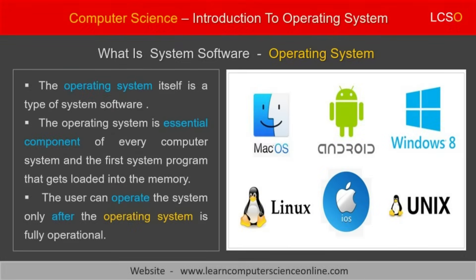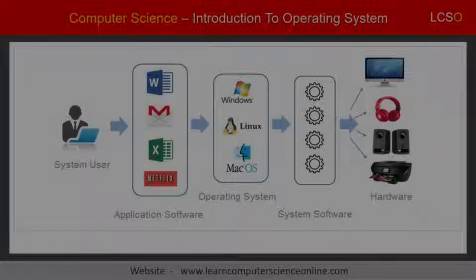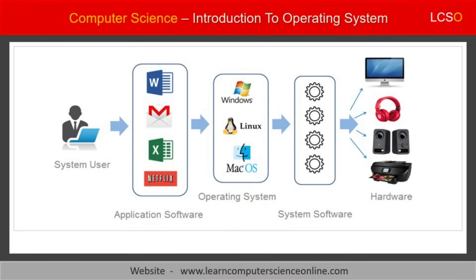Let us now summarize what is an operating system. The operating system is a type of system software and an essential component of every computer system. It internally consists of a group of programs specially designed to help the user to operate and manage the computer system.